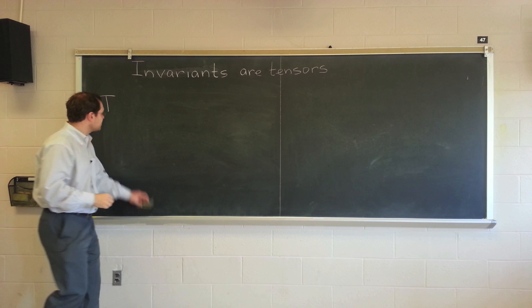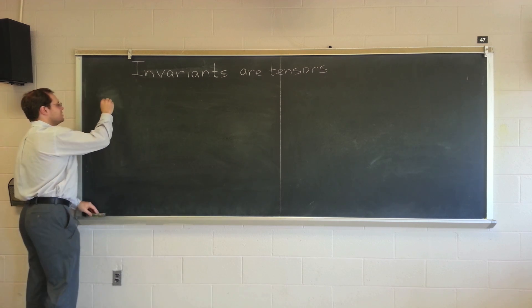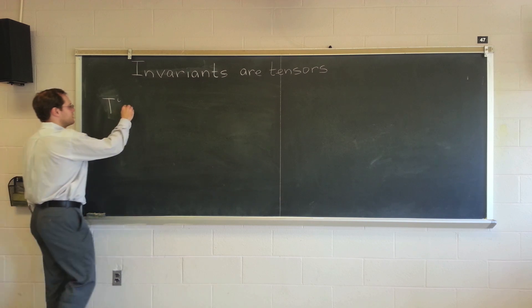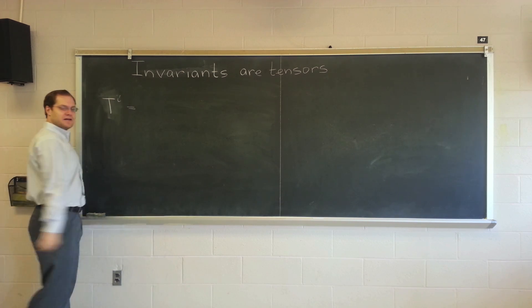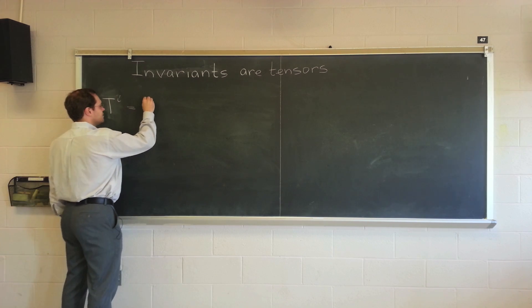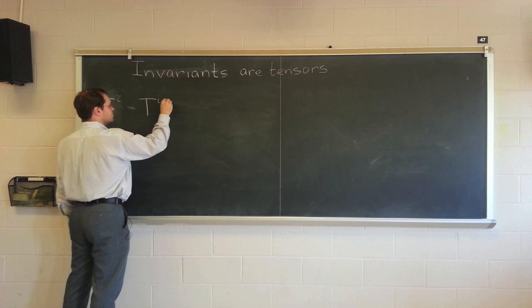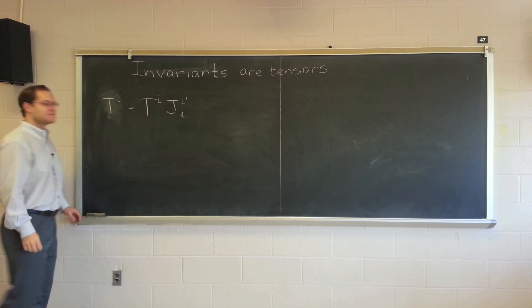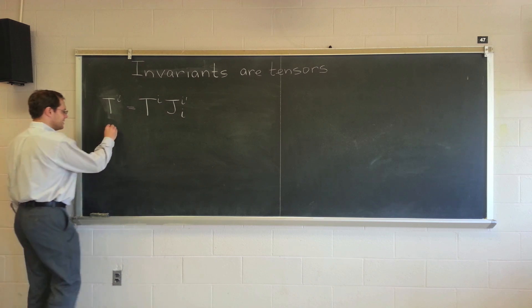We're going to leave some space for invariants. A variant, T_i, is called a first-order contravariant tensor if from one coordinate system to another, it transforms according to this rule.